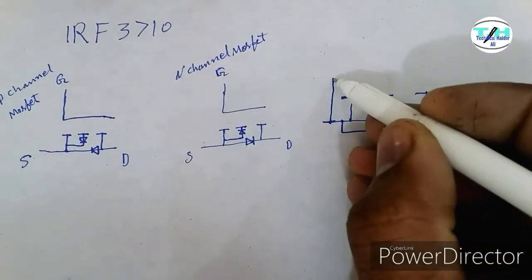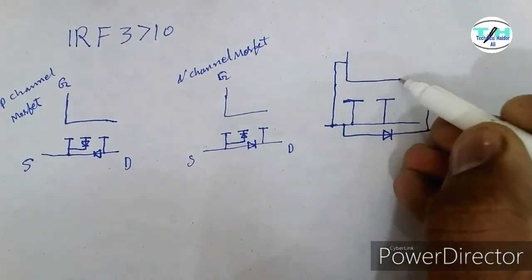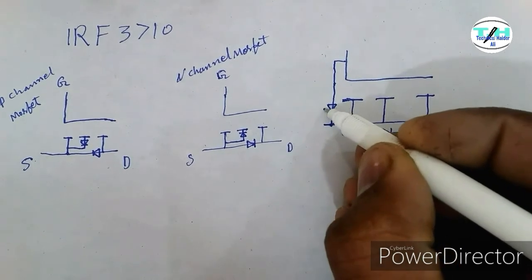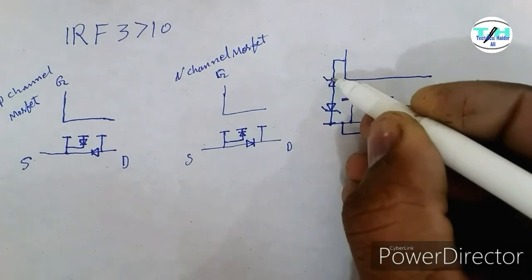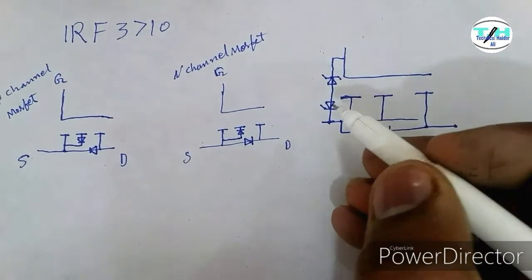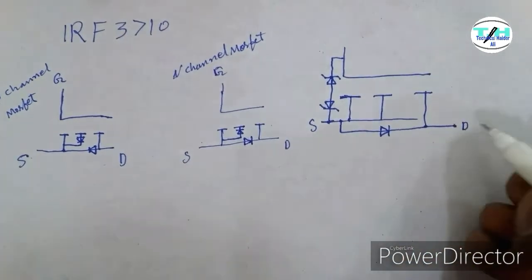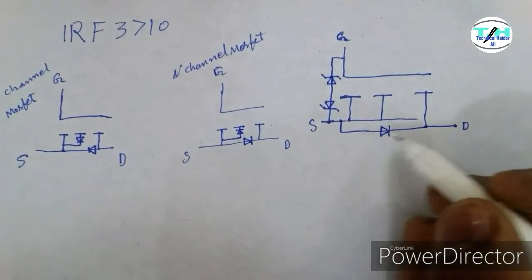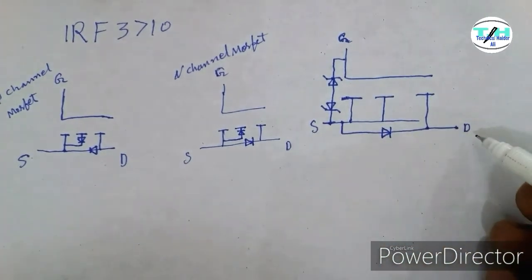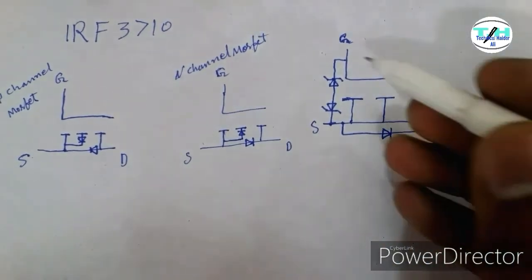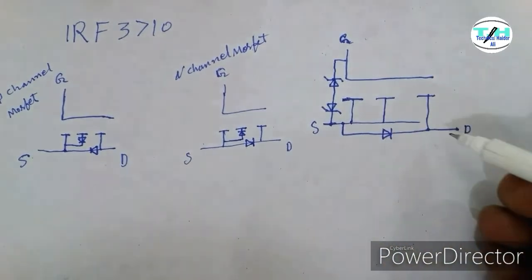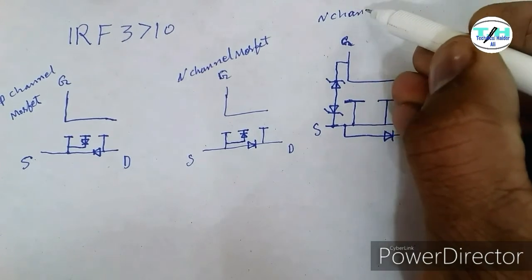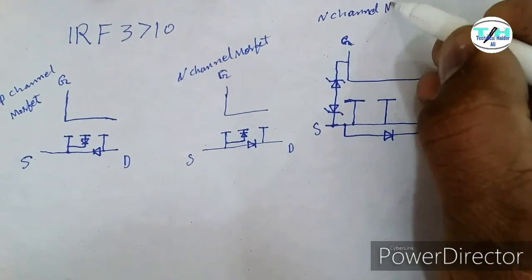This is the internal structure of the N-channel MOSFET IRF series. It has two zener diodes on it. It consists of three terminals: source, drain, and gate. Positive current can be passed from the source to drain in the absence of the gate current, while negative current is blocked when gate current is applied.